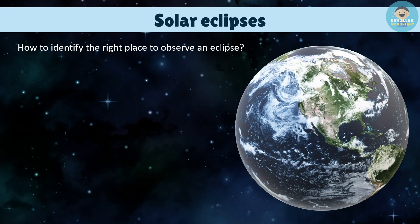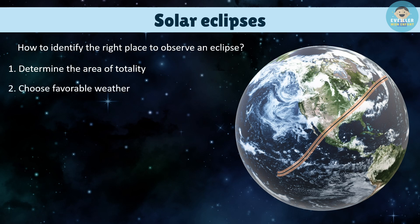So how to identify the right place to observe an eclipse? Here are some tips for identifying an ideal observation site. First, determine the area of totality — the zone where the Moon will completely obscure the Sun. Check the path of the eclipse and identify the area of totality in your area. Second, choose favorable weather: bad weather can spoil eclipse viewing, so choose a location with clear skies and a low probability of clouds, and check the weather forecast.